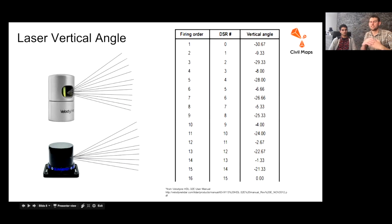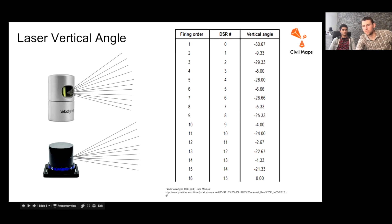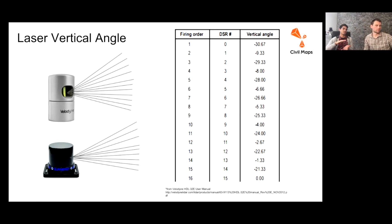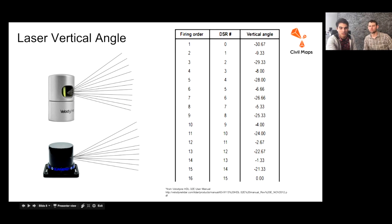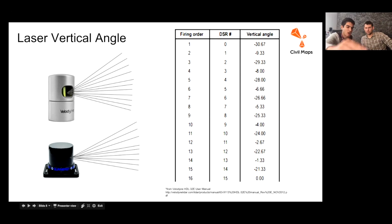The other aspect is the vertical angle. Lidars have multiple lasers at different vertical angles. Here you can see the different vertical angles of the lidar, along with their firing order — because the firing order matters. You don't want one laser firing to be accidentally mischaracterized as another. The firing order corresponds to different vertical angle pairs in a clever mechanism: every other firing corresponds to the top half and second half of those vertical angles, so as not to interfere with each other.